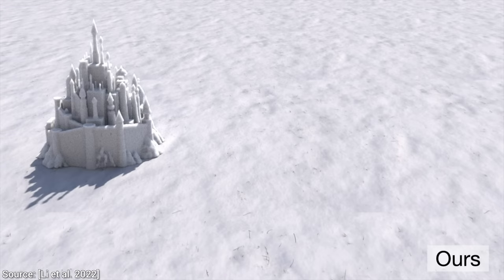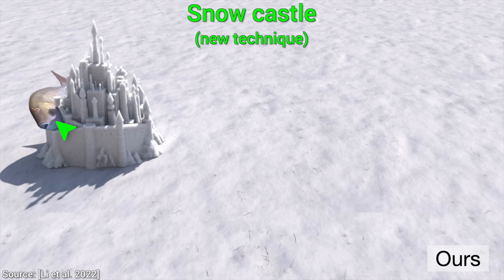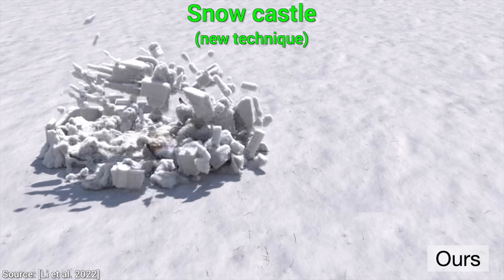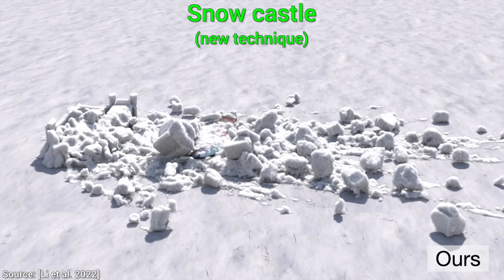Now, experiment number two! This one really speaks for itself, let me quote the paper, we simulate a snow castle hit by a high-speed elastic fish. This is beyond amazing, because simulating snow is notoriously difficult.